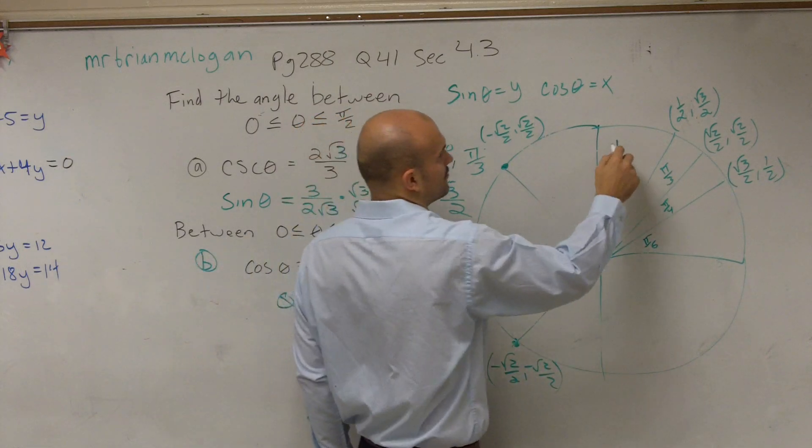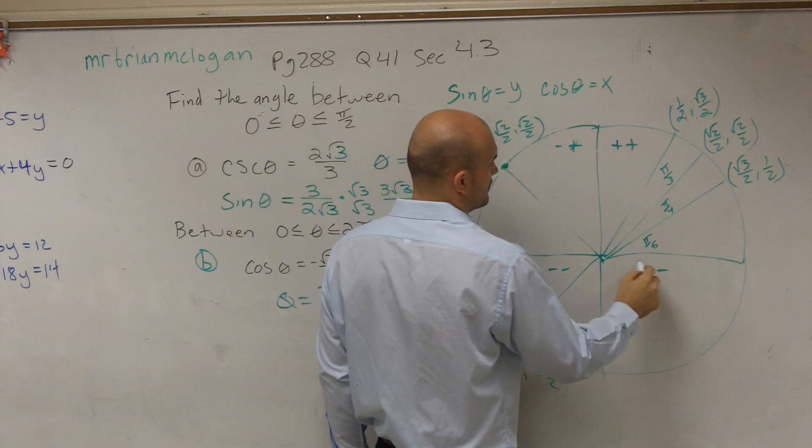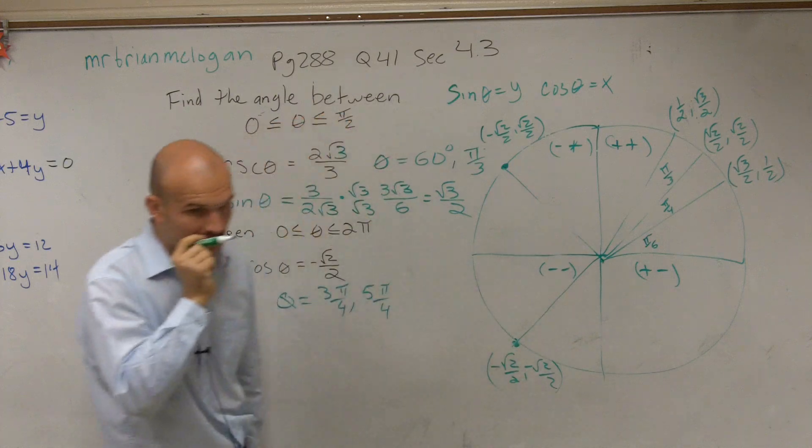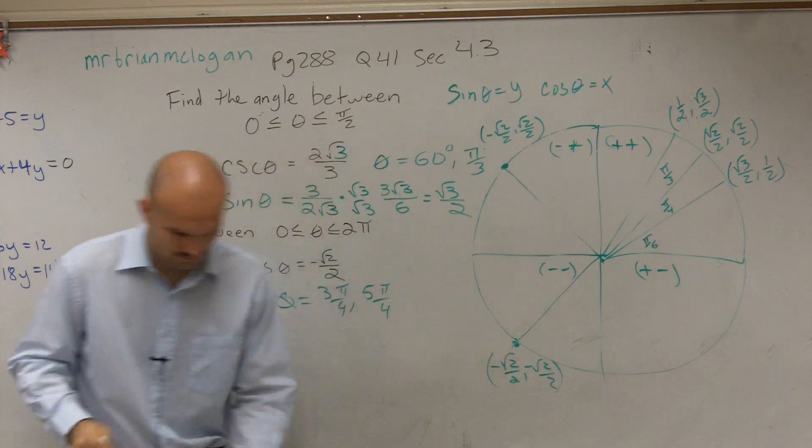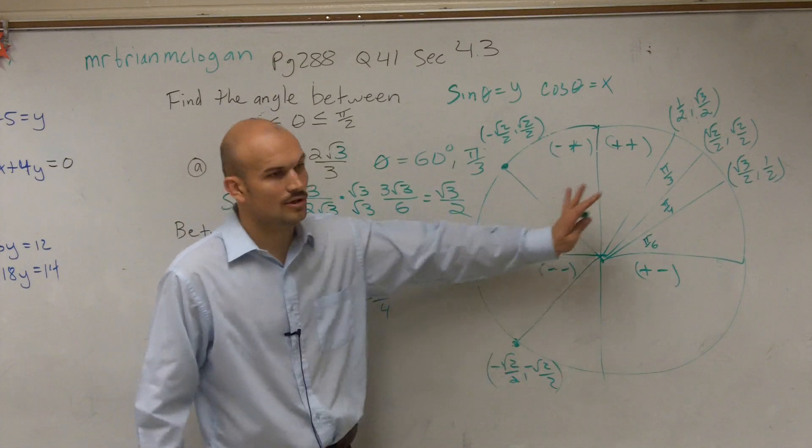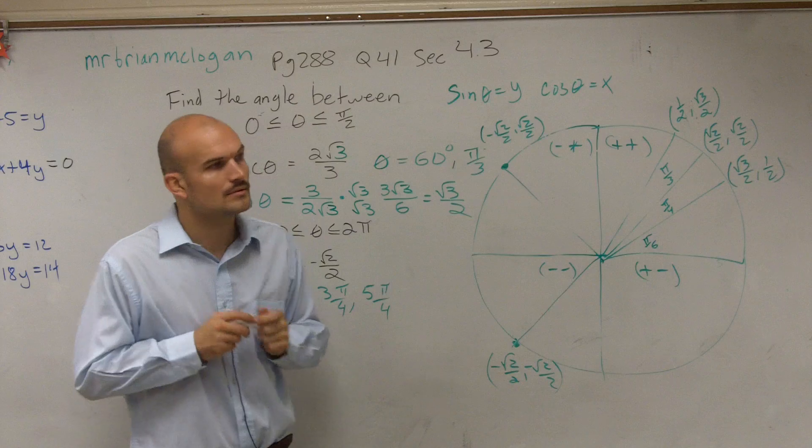In quadrant 4, x is still positive. But y is negative. Remember, we did plus, plus, negative, plus, negative, negative, plus, negative. I just thought, when it flipped, like, if a positive flips over the x-axis, then that x coordinate would be negative. Nope. Only when it flips over the y-axis is your x value going to be negative.